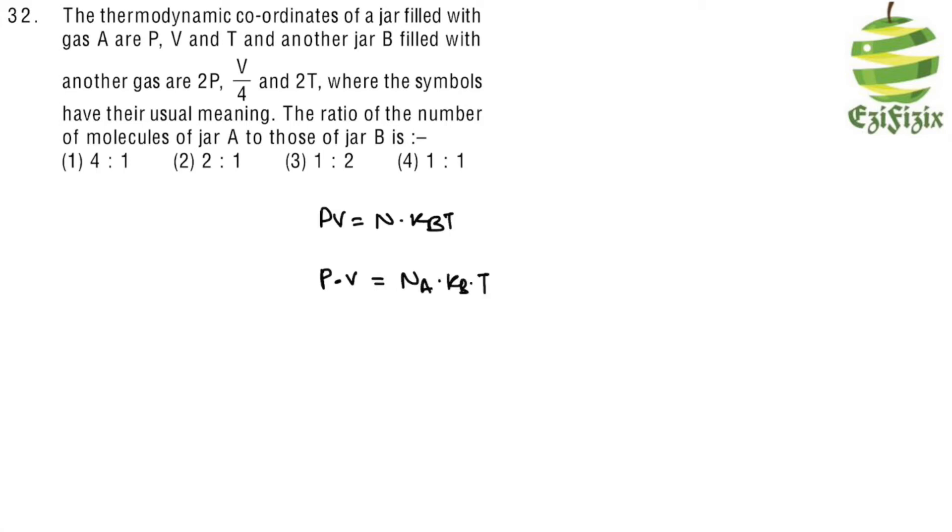For gas B, pressure is 2P, volume is V/4, which equals NB times kB times 2T. To find the ratio, we set up these two equations and divide them.